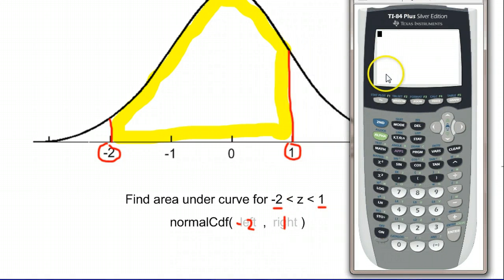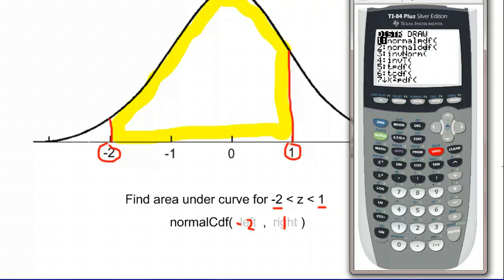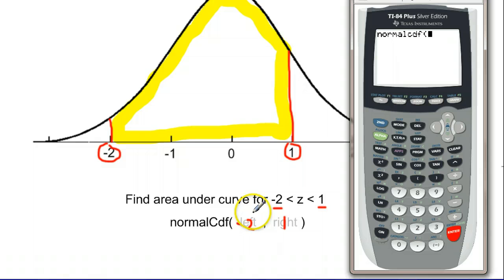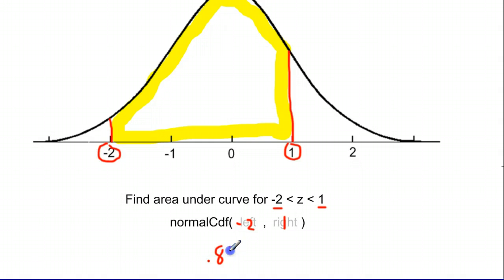If we pull out our calculator, we go to second followed by distribution, which is the vars key here. Right near the top you'll see normalPDF and normalCDF. We're actually going to never use normalPDF - it gives you probability of being at an exact point, and it's not something that really makes sense in most contexts. So normalCDF gives us a range of values. If we choose that one, we can type in our left bound, which is negative 2, and then comma our right bound, which is positive 1, and hit enter. And it tells us 0.819. That's roughly around the probability we were estimating, somewhere in the 70%, maybe as high as 80. So it's about 81.9% chance that you're going to end up in this yellow region.